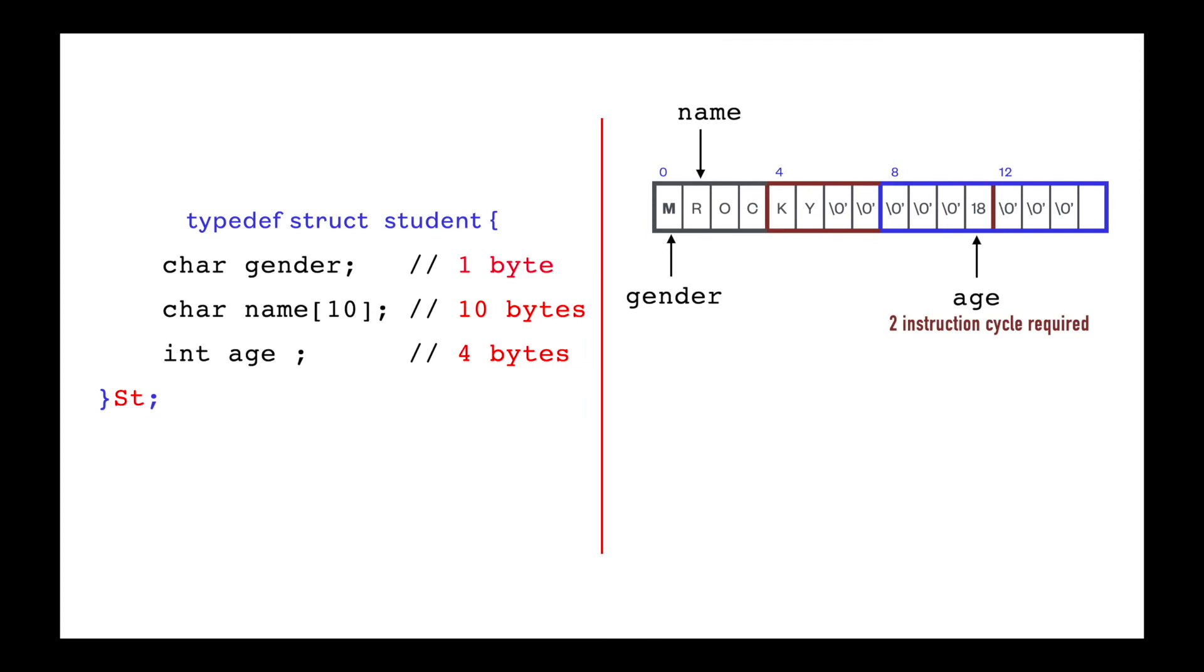Next see for age, which is having size of 4 bytes. So this must be fetched in one instruction cycle. If memory is allocated from next memory address, 2 instruction cycle will be required to fetch age. So to reduce the burden of one extra instruction cycle, this element age is stored from next 4 byte aligned memory address.